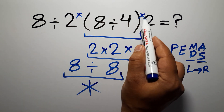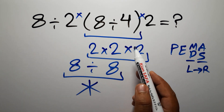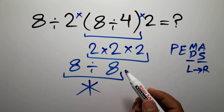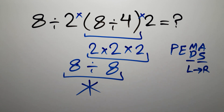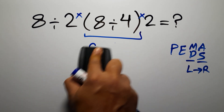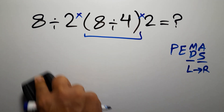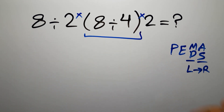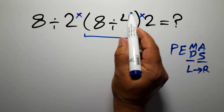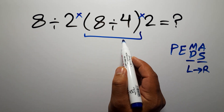So here, and here, we have multiplication. According to PEMDAS, first we have to do these parentheses.